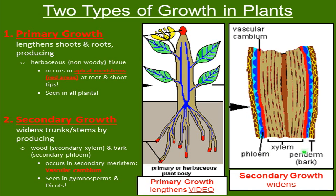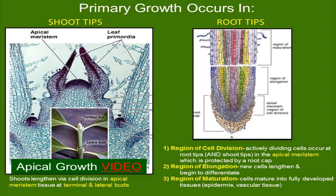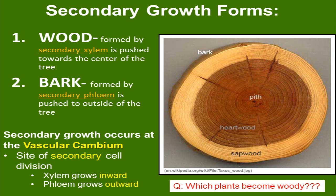One thing to look at is the primary growth video to show a plant growing in time-lapse photography. Primary growth occurs in the shoot tips, called the apical meristems. Secondary growth occurs at the vascular cambium — this is the site of secondary cell division. Xylem grows inward; phloem grows outward.